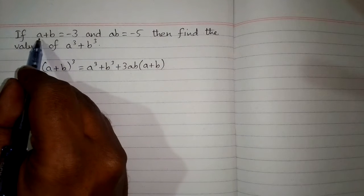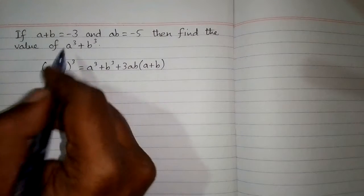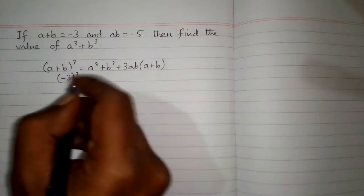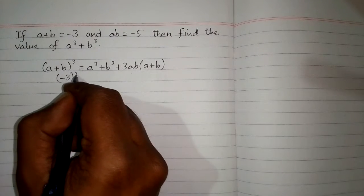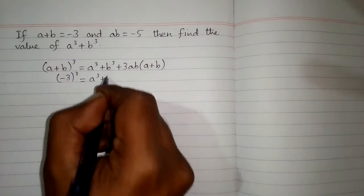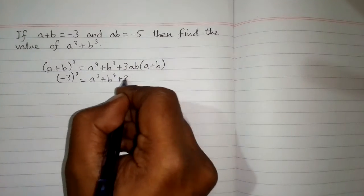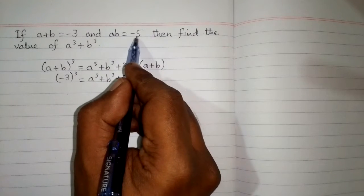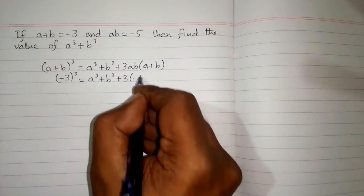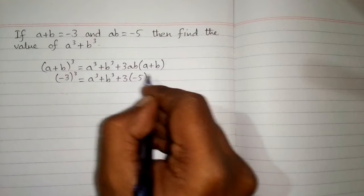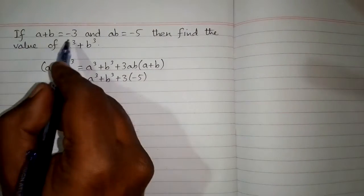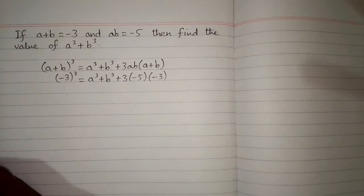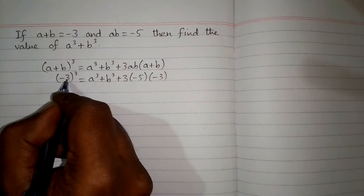It is given that a plus b is equal to minus 3, so we put minus 3 in place of a plus b. So we have minus 3 to the power 3 is equal to a cube plus b cube plus 3 times ab. The value of ab is minus 5, so we put minus 5 in place of ab, and minus 3 in place of a plus b.